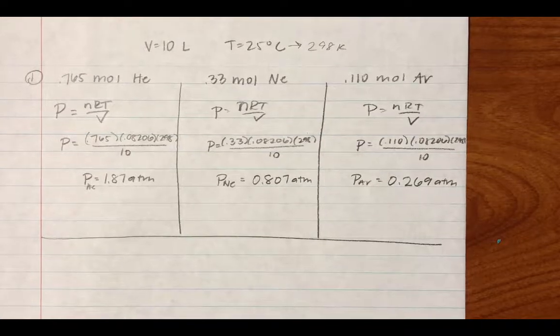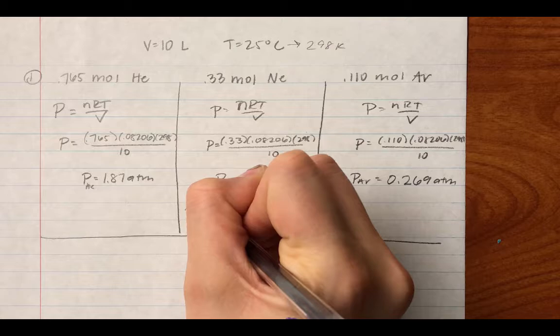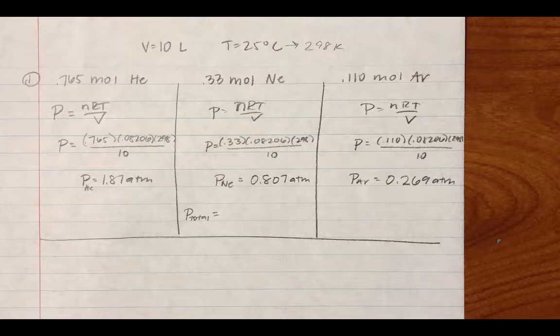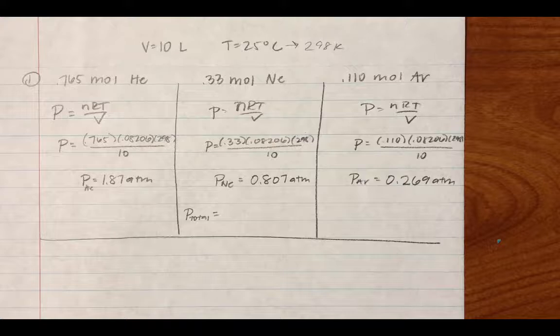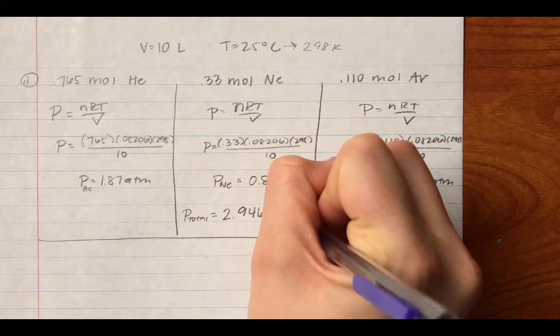So now I have my partial pressures for each one. So to find total pressure, I just add those three numbers up. So I add up my pressure of helium plus my pressure of neon plus my pressure of argon, and I get 2.946 ATM.